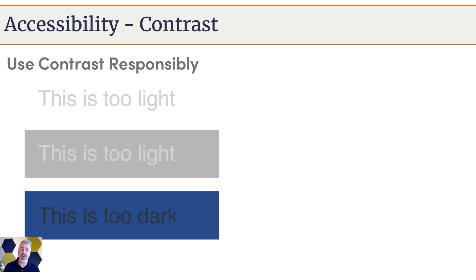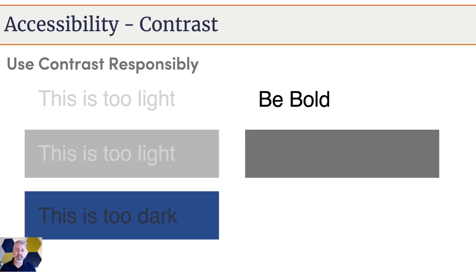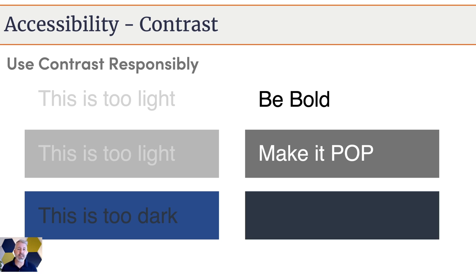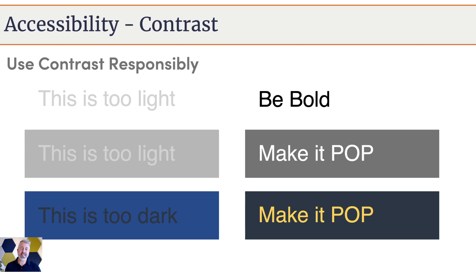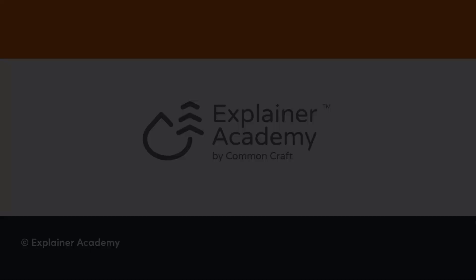The same problem occurs when we use color and the shades are too similar. What we want to do is be bold — design our videos so that the text pops off the screen and is obvious and very easy to read. That might mean using a dark gray and white so the white is very obvious, or even something with color like a dark blue and yellow — again, very obvious, very readable, and also very accessible. Contrast is something you'll need to keep in mind alongside the other accessibility considerations we've discussed.